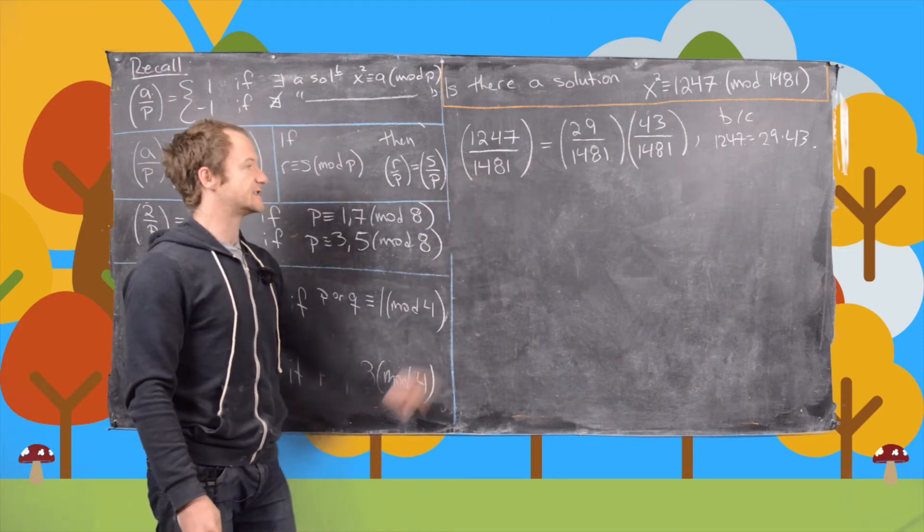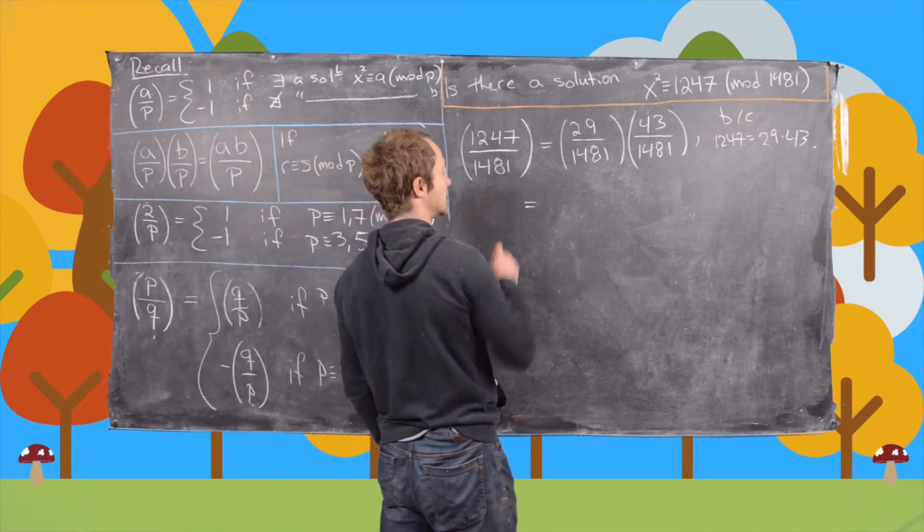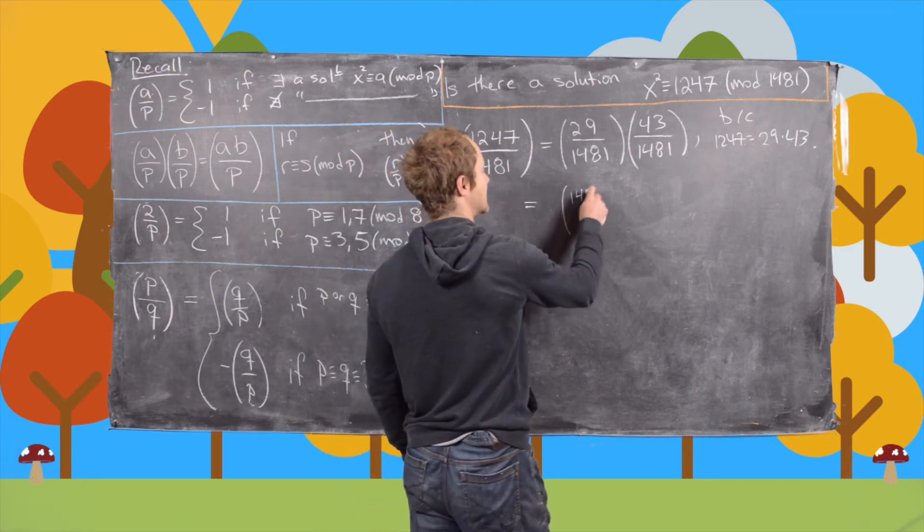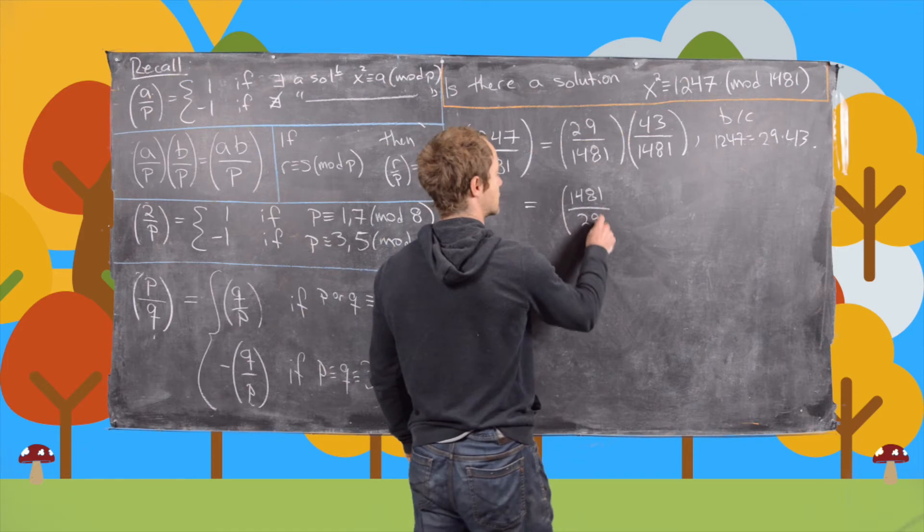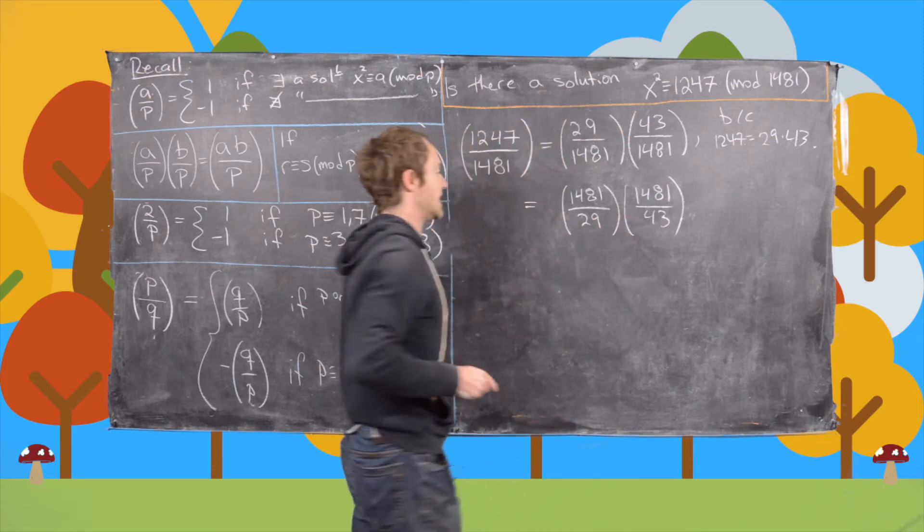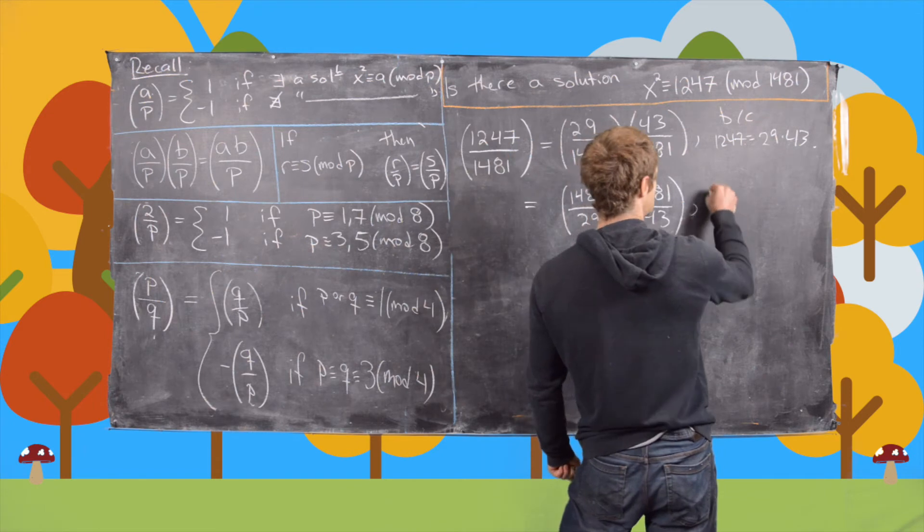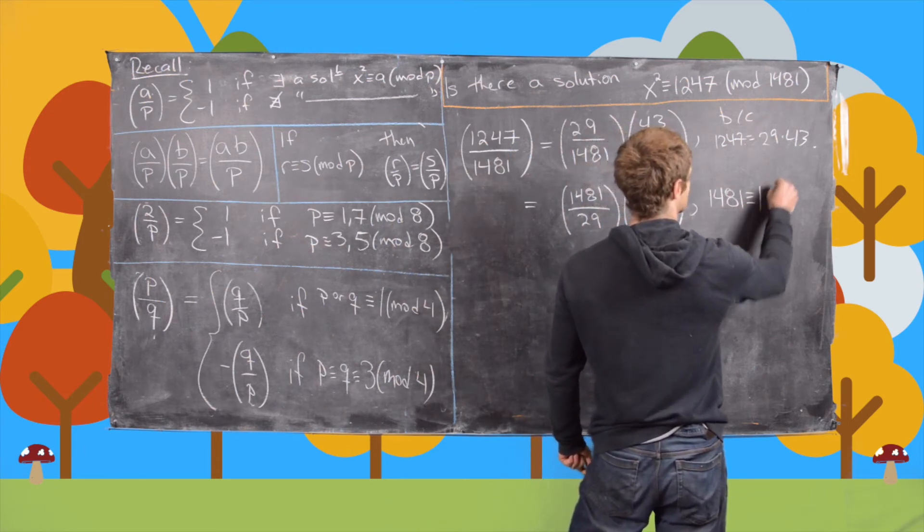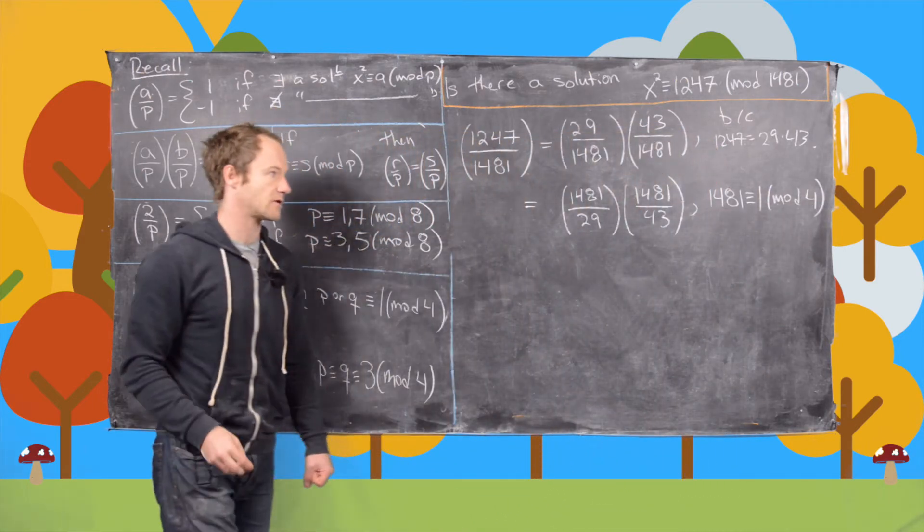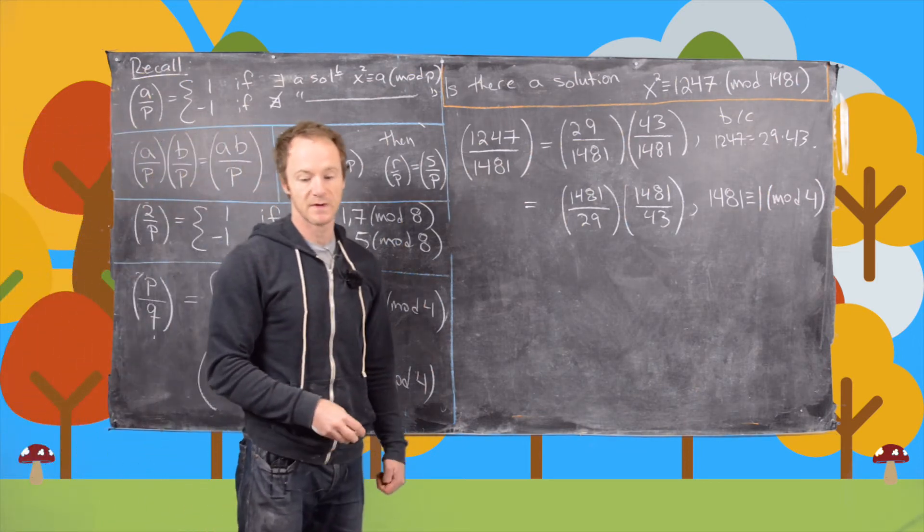So the next thing that we want to do is flip these at the potential cost of introducing a minus sign. So let's go ahead and flip them and then decide if we need to add in a minus sign later. So we can flip these to 1481 by 29 and 1481 by 43. But in fact, we do not get a minus sign. And that's because 1481 is congruent to 1 mod 4. So only one of them needs to be congruent to 1 mod 4 in order to flip without a minus sign. So we only need to check that one.